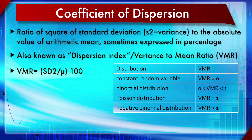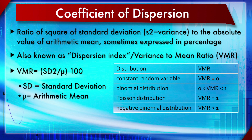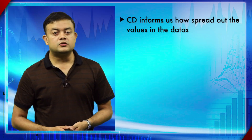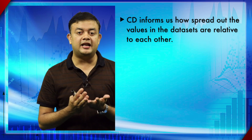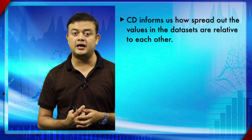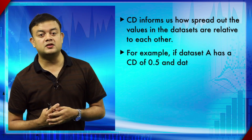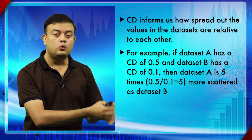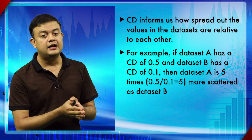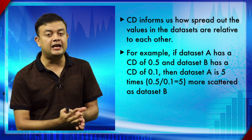The formula for CD is SD squared divided by mu, and you can multiply by 100 as well. The value of CD tells you what kind of distribution your data set follows — whether it is equal to one, less than one, more than one, or zero. For example, if data set A has a CD of 0.5 and data set B has a CD of 0.1, then data set A is five times more scattered than data set B.